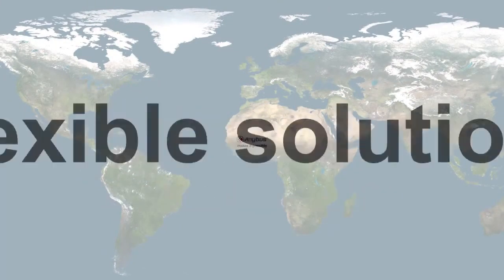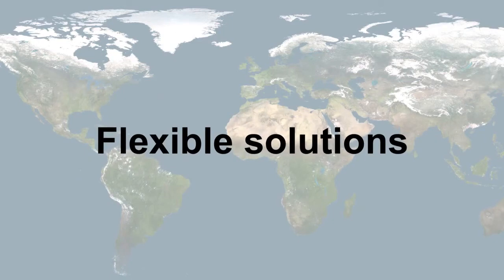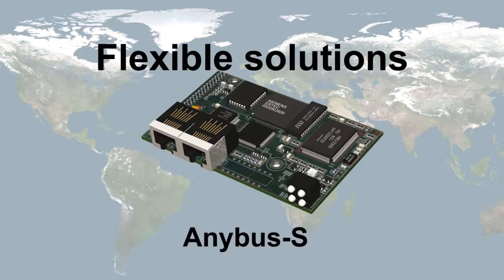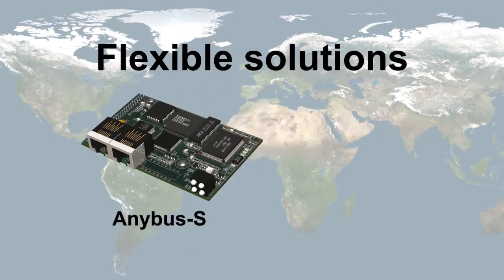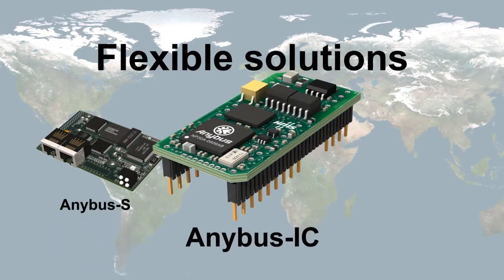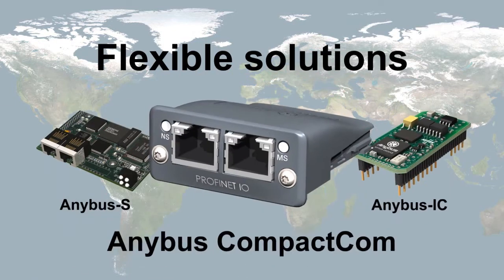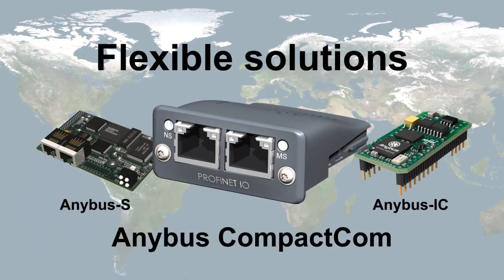Anybus makes this possible by offering flexible solutions for your particular connectivity needs. Anybus S is a network connectivity card trusted by thousands of device manufacturers all over the world. Anybus IC is a very small connectivity module, optimal if you have limited space or want to design the physical connector interfaces yourself. Anybus Compact Com is a modular product that plugs into your device to provide access to any network.